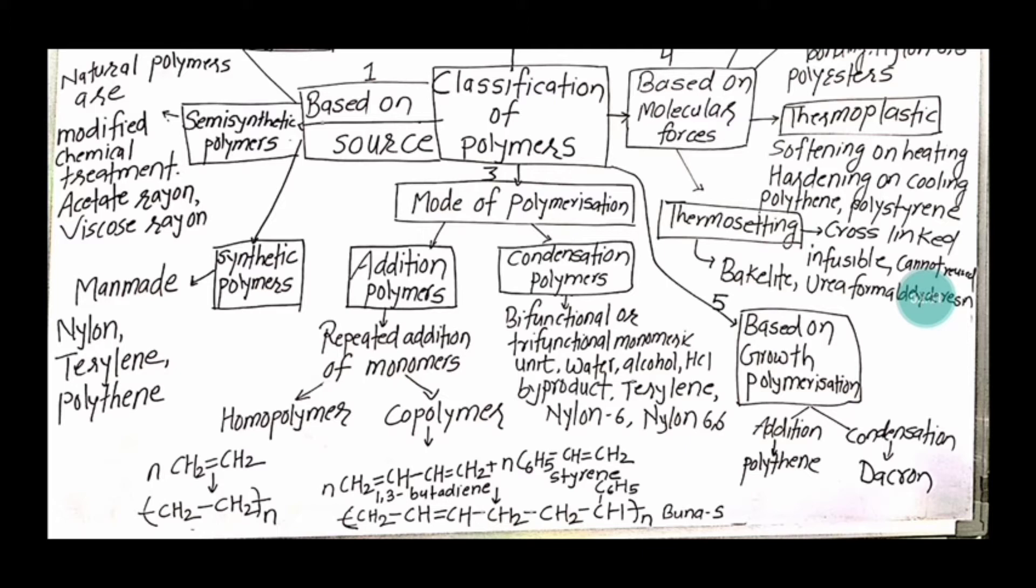For example, 1,3-butadiene and styrene form Buna-S, that is a copolymer. In condensation, we have bifunctional or trifunctional monomeric unit and there is formation of water, alcohol, or hydrochloric acid as a byproduct. Example we have terylene, nylon 6, nylon 6,6. They come under condensation polymers because some water molecule, alcohol, or HCl forms as a byproduct.